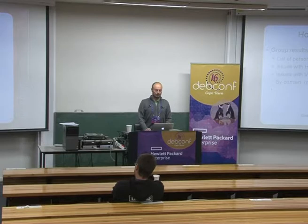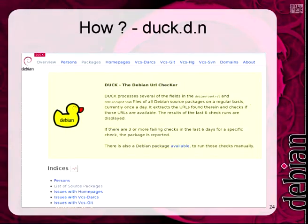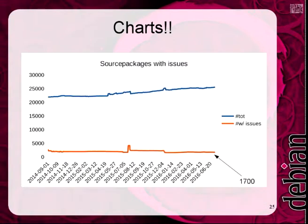The output of all this grouping produces static HTML files, and I use Gnuplot for the charts. It's duck.debian.net — if you want to take a look, look up your name or your packages and start fixing things. As I started tracking in September 2014, I began with about 22,000 source packages in total. The number is slowly rising — currently we're at about 25,000. The red line is the packages with issues. The peak in mid-2015 was when SourceForge went offline for some days.